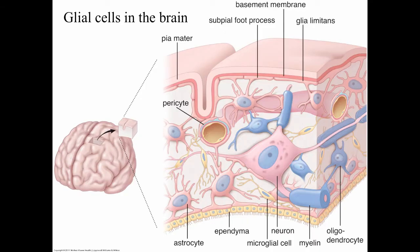This is just a cartoon to highlight some of the glial cells within the brain, so you can take this hypothetical piece of the brain and look at some of the glial cells in relation to a big neuron. Here's a neuron, here you can see some ependymal cells, some astrocytes, oligodendrocytes which are making the myelin that wraps around the axons, and some microglial cells.